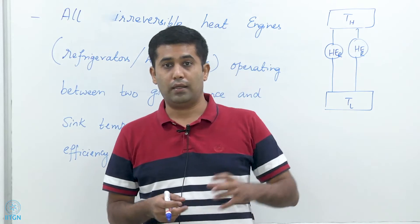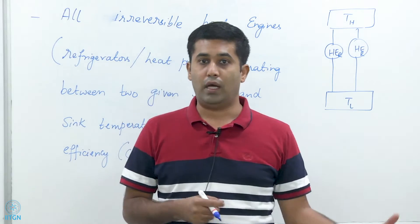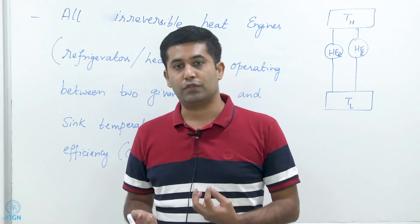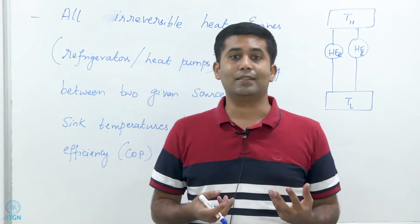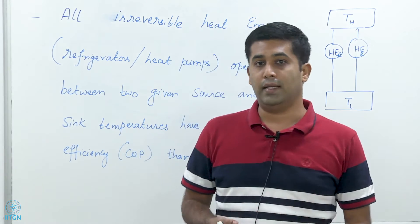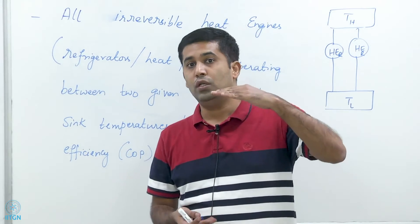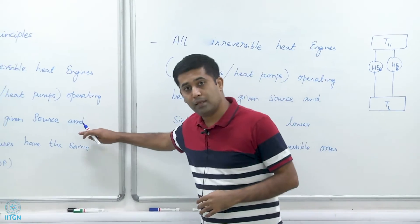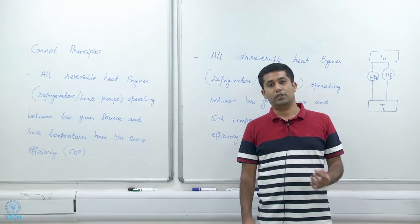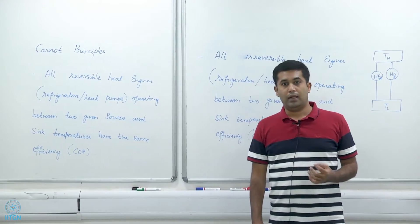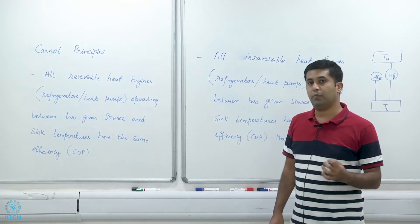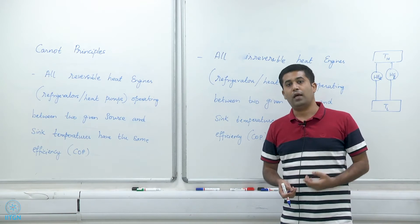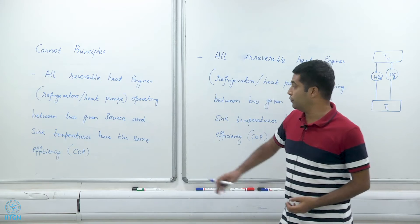It could be a small engine or a big engine; one could have water as the working fluid, the other could have mercury; one could be made of steel, the other of gold — it does not matter. As long as we have a reversible heat engine operating between two given thermal energy reservoirs, all those reversible heat engines will have the exact same efficiency. All reversible heat pumps or refrigerators operating between two given temperature limits also have the same COP.